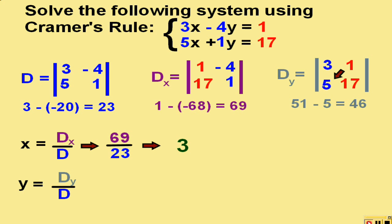To find the y value, we simply put D sub y over D, which would be forty-six over twenty-three, or just two.